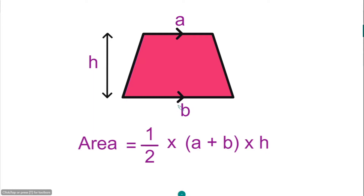If we imagine the distance between the two parallel sides to be the height h, then the area of the trapezium can be calculated using this formula: a half multiplied by the sum of the parallel sides, multiplied by the vertical height.